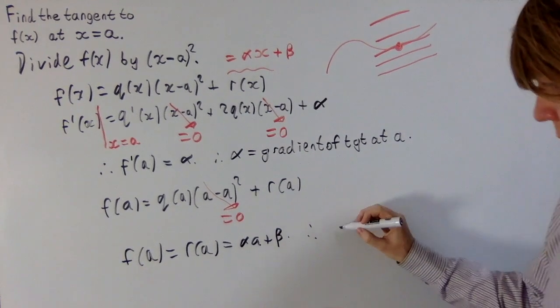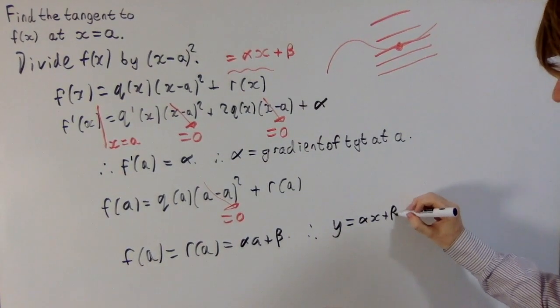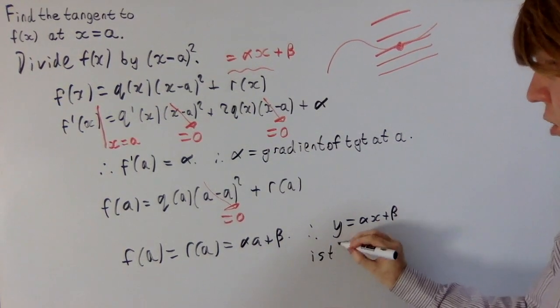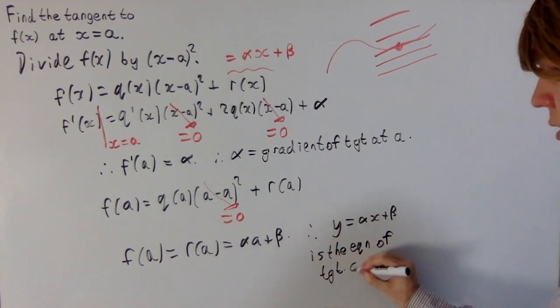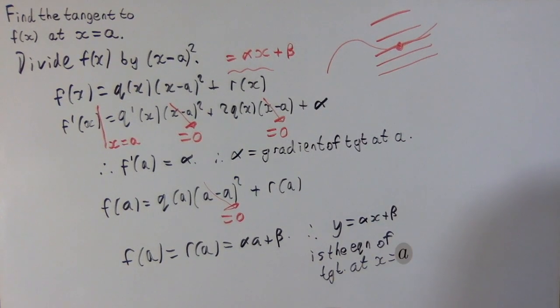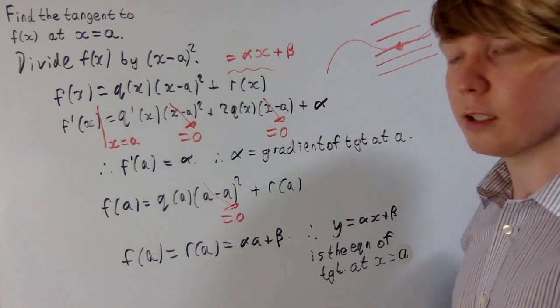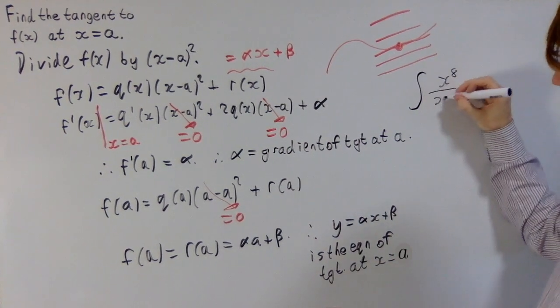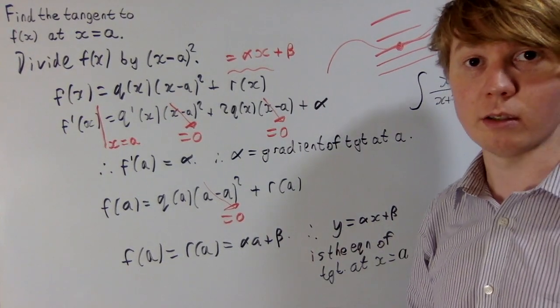And therefore, your equation y equals alpha x plus beta does indeed intersect the curve, so this is the equation of the tangent at the point x equals a. So there you go, polynomial long division. It turns out it's not just useful for calculating nasty integrals, maybe something like this. It's also really useful for calculating the equation of a tangent to a polynomial.